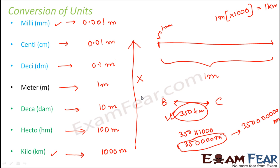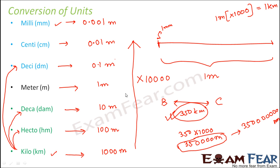Multiply by multiples of 10. For example, to convert kilometer to hectometer, you multiply by 10. Kilometer to decameter, you multiply by 100. Kilometer to decimeter — that is four steps — so you multiply by 10,000. Kilometer to centimeter, one more zero. The number of zeros depends upon the number of steps between the two units.